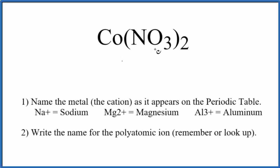To write the name for Co(NO3)2, the first thing we need to realize is this NO3 here. This is called the nitrate ion. It's a polyatomic ion. We actually have two nitrate ions here.